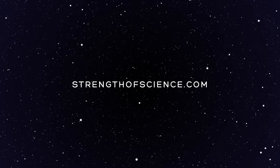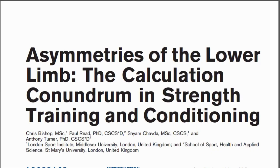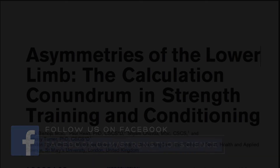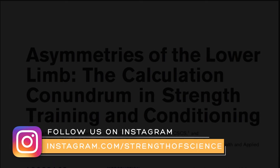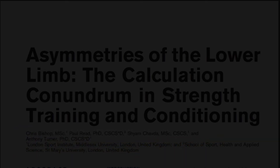The title of this paper is 'Asymmetries of the Lower Limb: The Calculation Conundrum in Strength Training and Conditioning' — a little cheesy, I know. First, I'd like to say thank you to my fellow authors, Anthony Turner and Sharm Chavda, who I work with at Middlesex University, and Paul Reed as well.